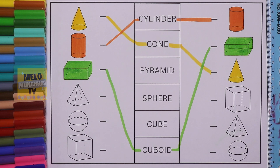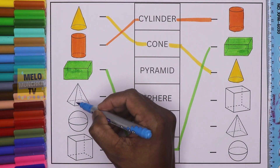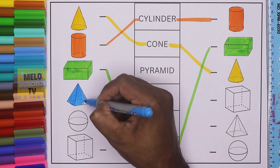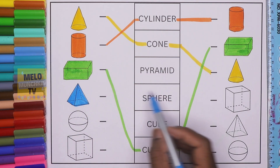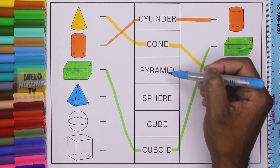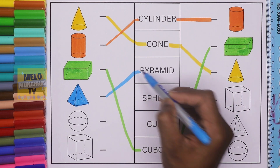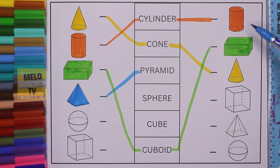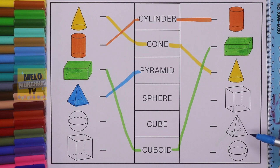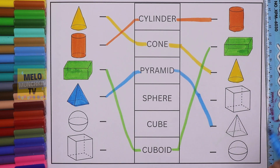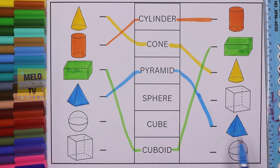Next I'll take light blue color to color the pyramid — this is pyramid. As I have told you in my previous video, if you didn't see it then go and watch that video also. Now where is pyramid in the list? First is cylinder, cone — this one is pyramid. I'll join this. And where is it on the other side? Cylinder, cuboid, cone, cube — this is pyramid. I found it, I'll join it like this and color it.